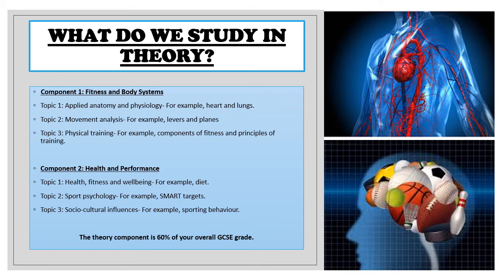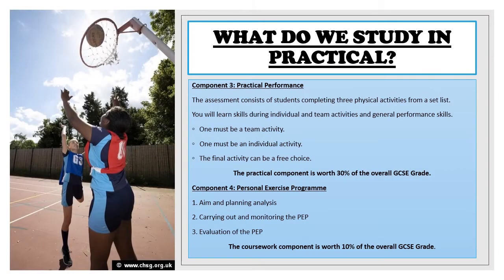The theory component is 60% of your overall GCSE grade. Now let's have a look at what we study in practical. Practical is split into two components. Component 3 is the practical performance — you will be assessed in three practical activities. One must be a team sport, one must be an individual sport, and the final activity can be either a team or an individual sport. The practical component is worth 30% of your overall GCSE grade.